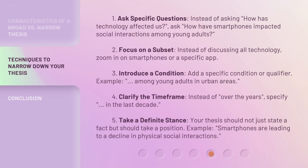Technique 1: Ask specific questions. Instead of asking 'How has technology affected us?' ask 'How have smartphones impacted social interactions among young adults?' Technique 2: Focus on a subset. Instead of discussing all technology, zoom in on smartphones or a specific app. Technique 3: Introduce a condition. Add a specific condition or qualifier. Example: 'Among young adults in urban areas.'